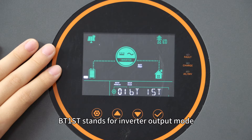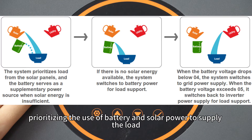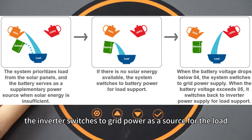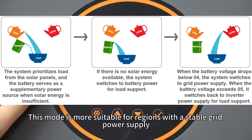BT-1ST stands for inverter output mode, prioritizing the use of battery and solar power to supply the load. When the battery voltage drops below the under-voltage determination voltage set, the inverter switches to grid power as the source for the load. This mode is more suitable for regions with a stable grid power supply.